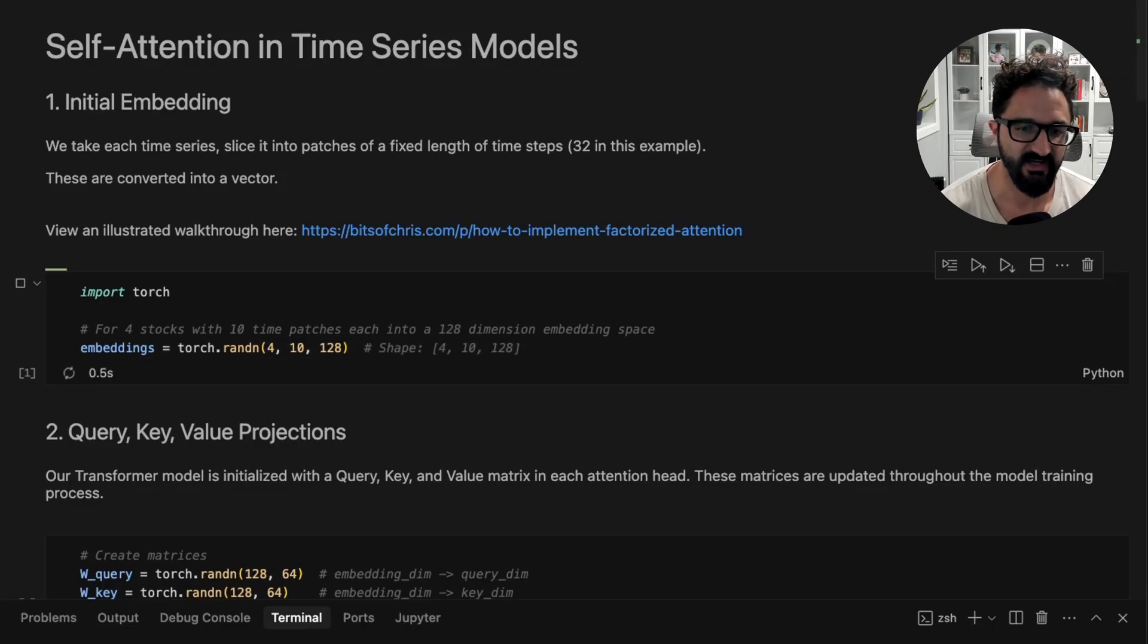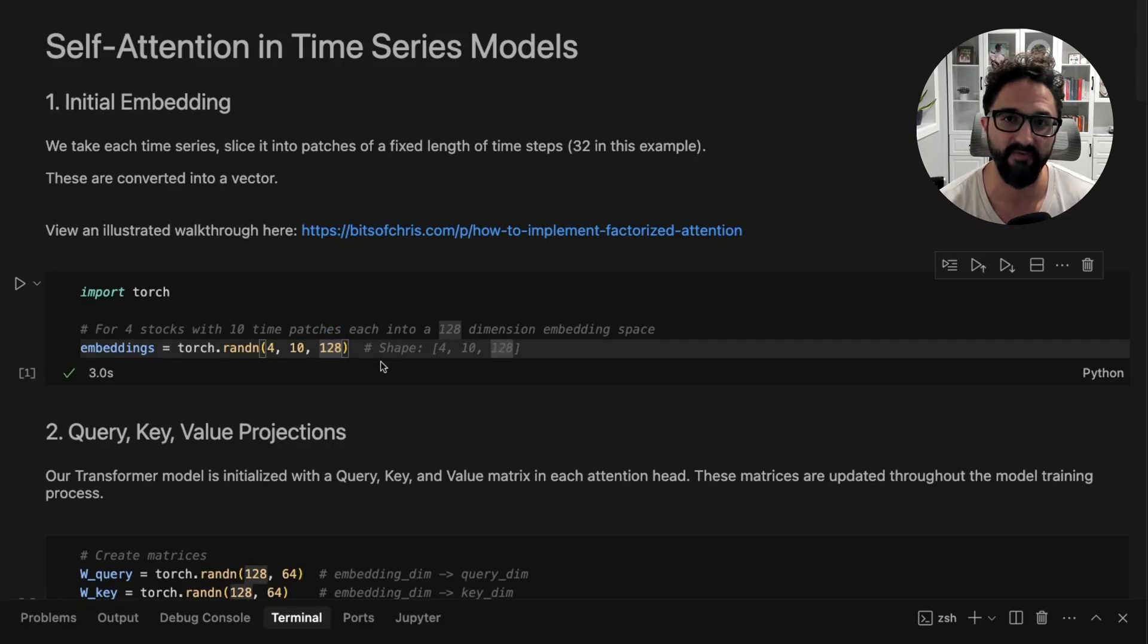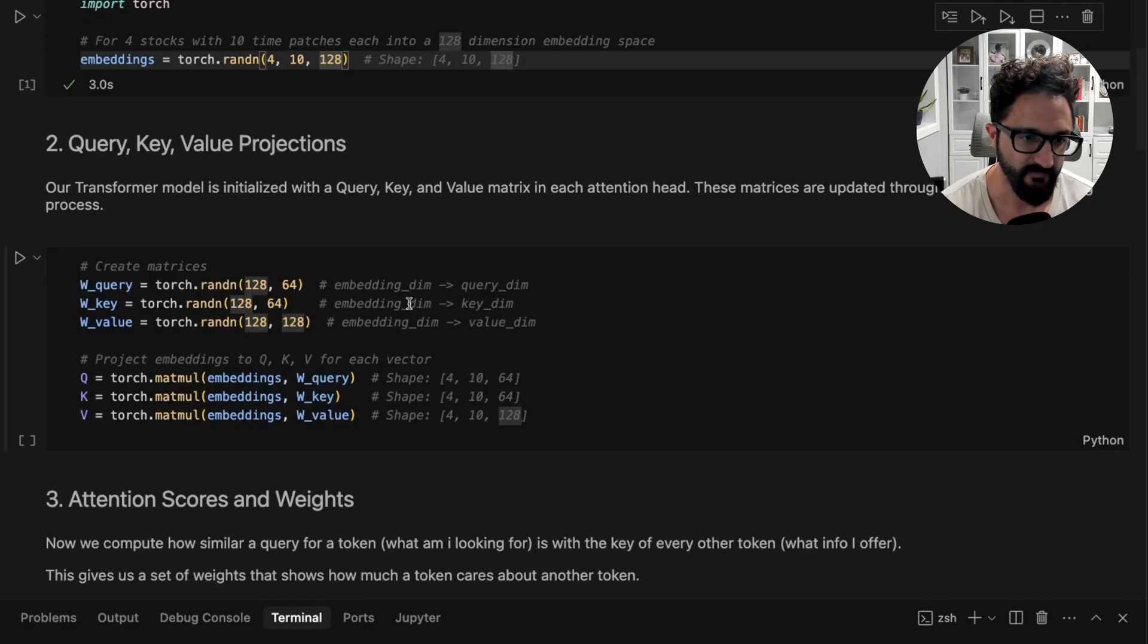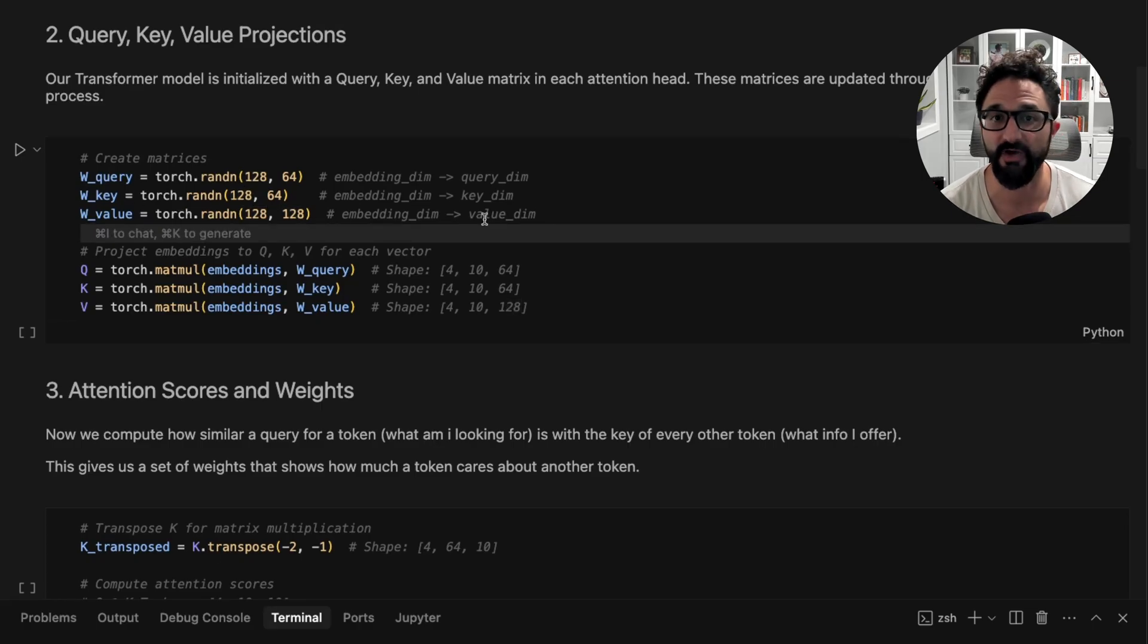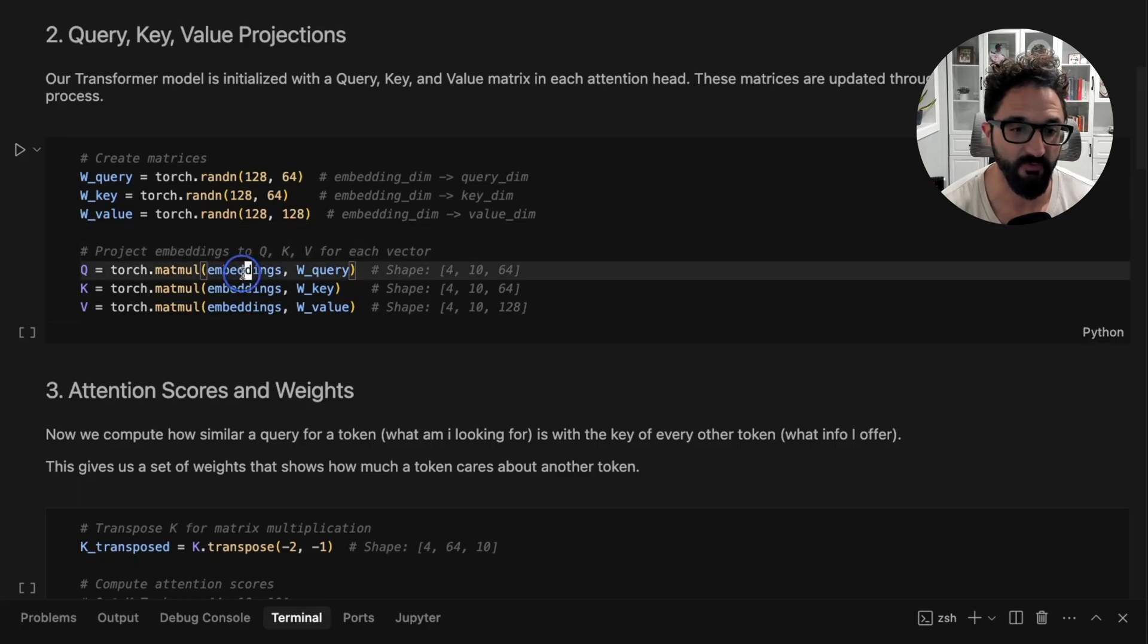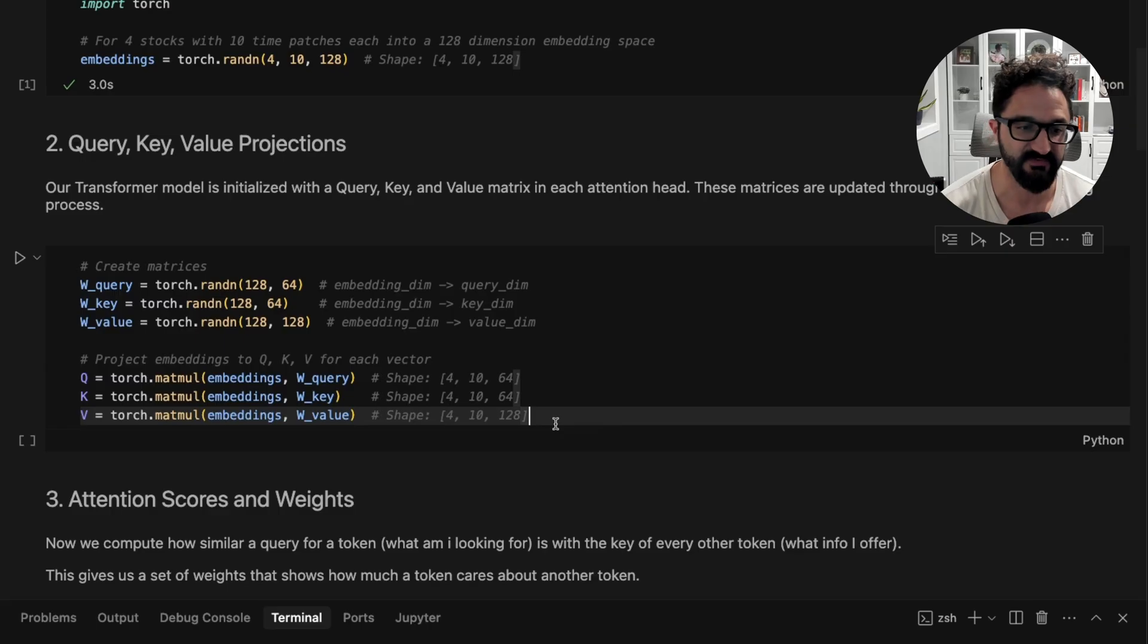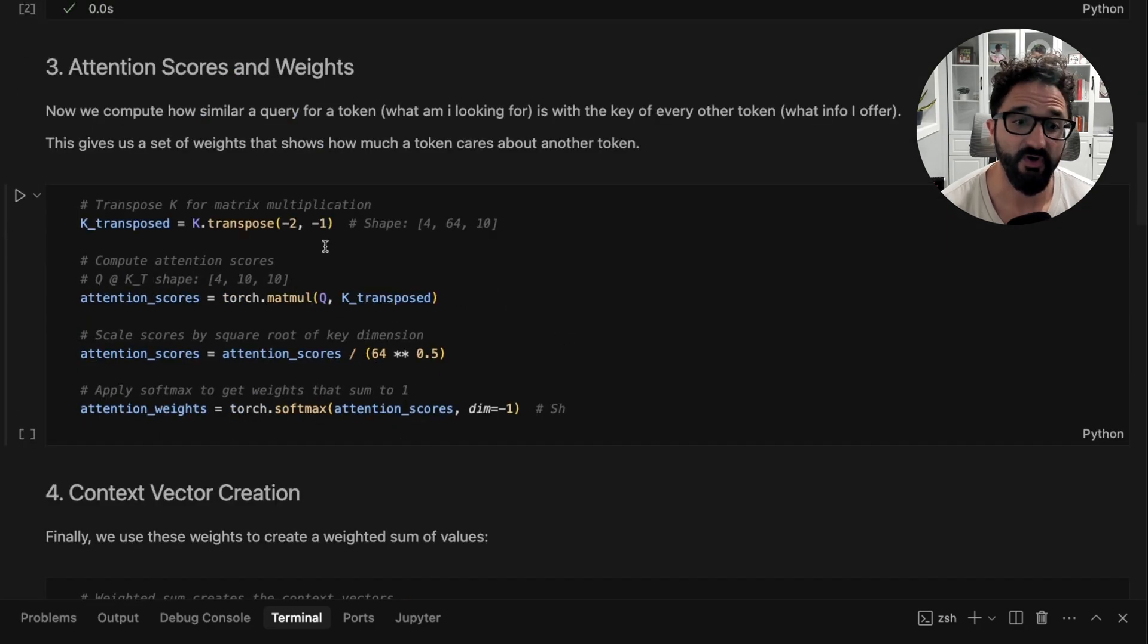To compute self-attention, let's just initialize our embeddings. We're assuming we have four stocks here with 10 time patches each. So we're not computing the embeddings anymore—we're assuming we have 10 arrays of 128 values that represent each patch's embedding. We're computing timewise attention to start now. We're just going to initialize our query, key, and value matrices. These are the weight matrices that our model will learn. We're starting with them random here. Then we're going to project all of our embeddings from step one into this higher dimensional space, creating these matrices of the query, key, and value vectors for each token. Now we're going to compute the attention scores for each.